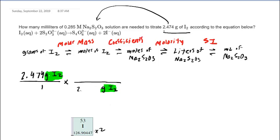So when you do that, you get 253.81, approximately, grams of iodine. And that will be present in one mole of iodine. So the grams are going to cancel out, and that gives us the moles of iodine at this point in the conversion.